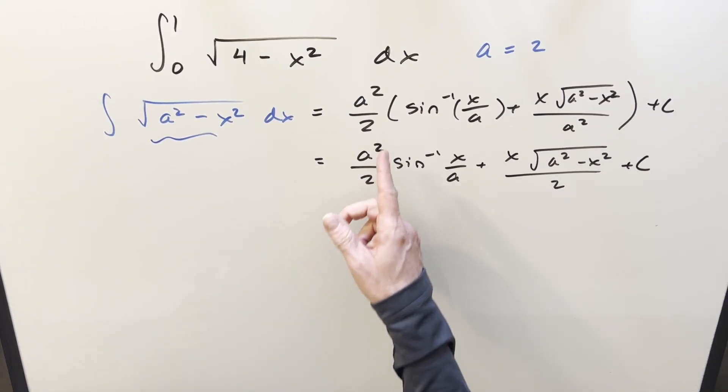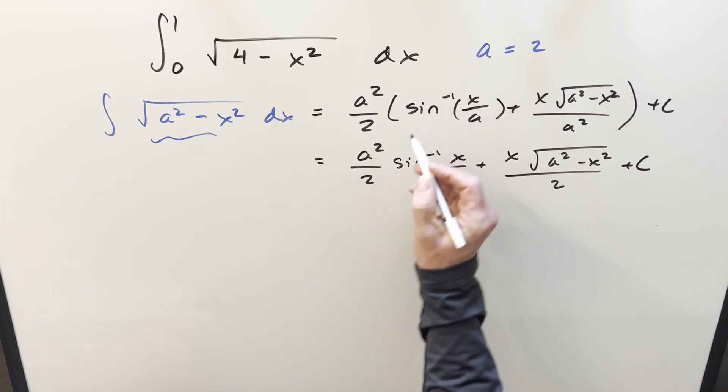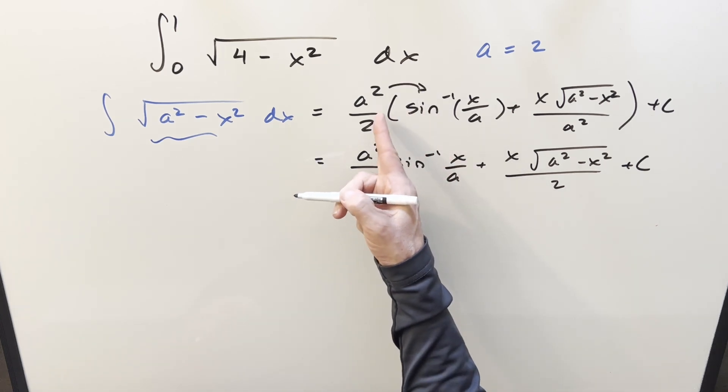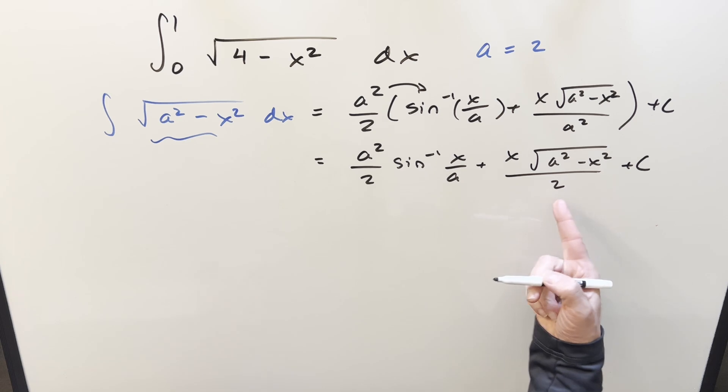Okay, one thing that occurred to me at the last second is it might be nice to just distribute this in, so we've got two versions here, the second one I distribute in the a squared just because it's going to cancel with this one right here.